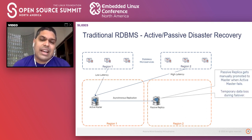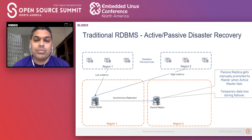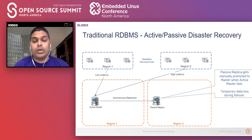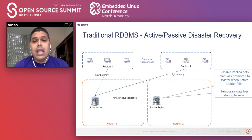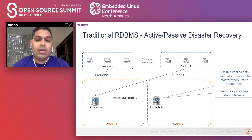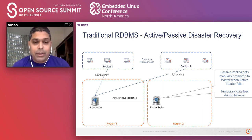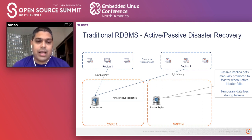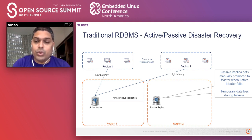In order to make this setup amenable to recovery from disasters, we add a passive replica in a different region using asynchronous replication — essentially taking the write-ahead log of the master database instance and replicating after the data has been committed to the passive replica in a separate region. We have to manually promote this passive replica if we have a total outage and lose the instance. During this failover, we will have some temporary data loss for data that has not yet had a chance to replicate to the passive replica.